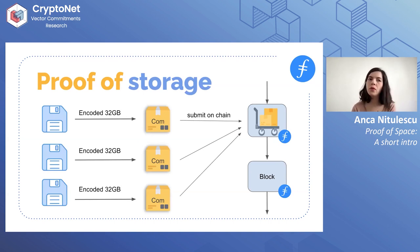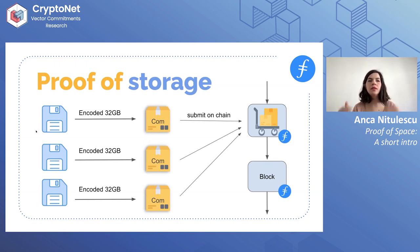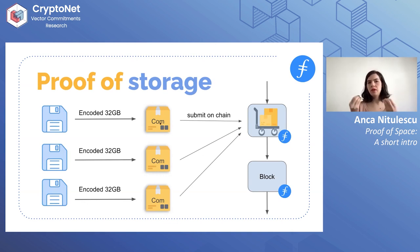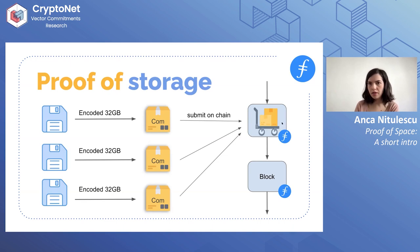So how exactly does it work for Filecoin? The proof of storage requires splitting the data into sectors of 32 gigabytes. Because this sector can be any kind of data, we like to encode them in an incompressible manner, and then commit to this encoded 32 gigabytes. We submit the commitments into the chain.